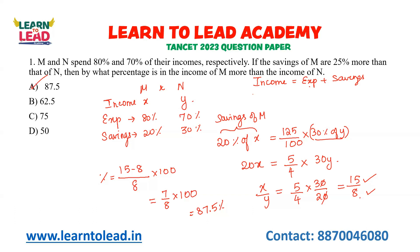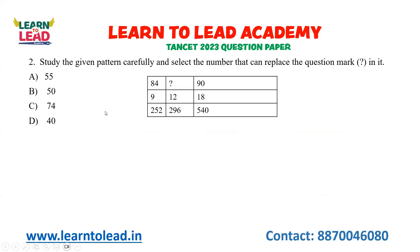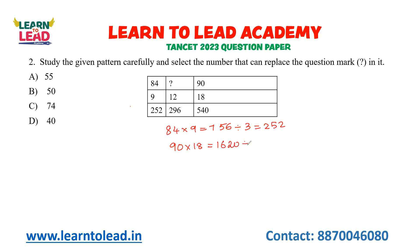The next question says: study the given pattern carefully and select the number that can replace the question mark. In a particular relation, if I take 84 into 9, I get 756, divided by 3 gives 252. For the last column: 90 into 18 is 1620, divided by 3 gives 540.